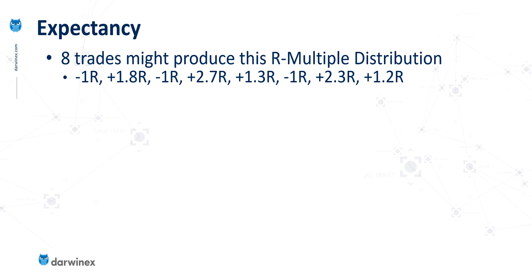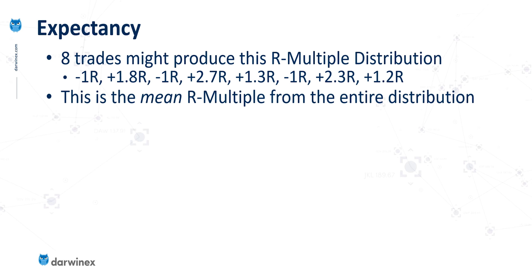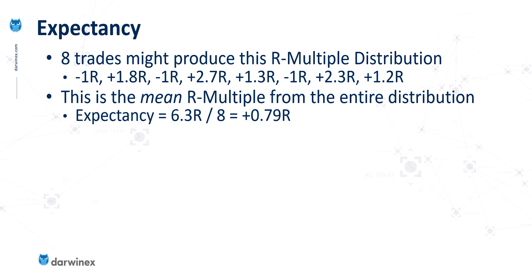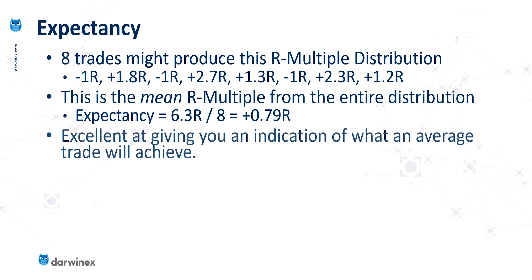Now that we have this distribution, we can calculate the expectancy. This is the mean, or the average, of each of the R-multiples across the distribution. In this particular case, we need to add up all of the individual R values, which comes to 6.3R, then divide by the number of trades, which is 8. So we see the expectancy of the system here is positive 0.79. This is really useful because it gives us an indication of what an average trade will usually achieve.